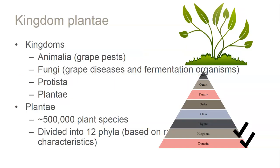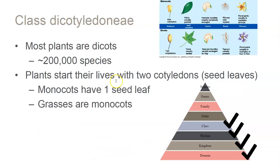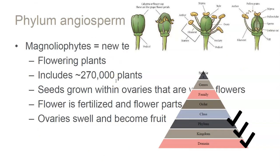The kingdom — we are a plant, not an animal, fungi, or protist. There are over half a million plant species divided into 12 phyla. Grapevines are magnoliophytes, which is just a term for flowering plants where the seeds grow within ovaries. The flower is fertilized and begins — becomes fruit.